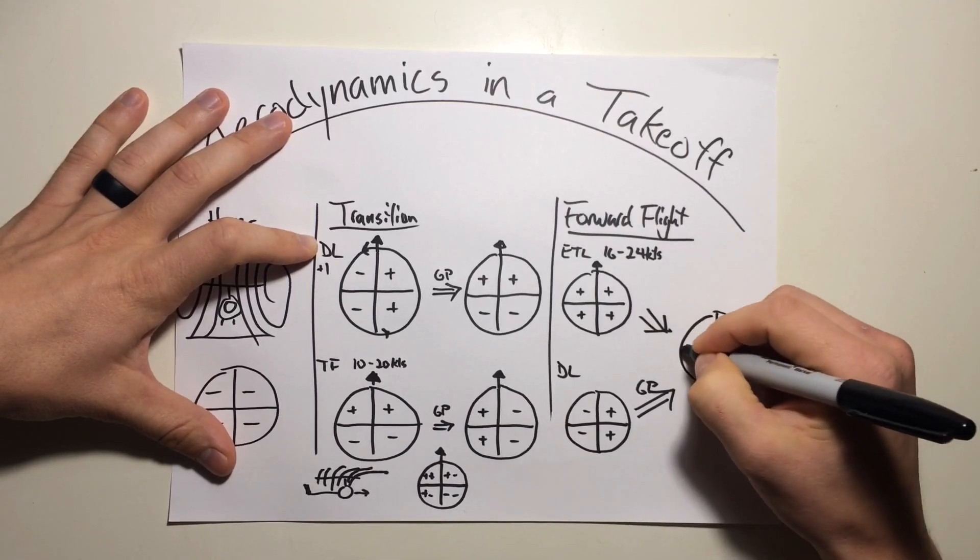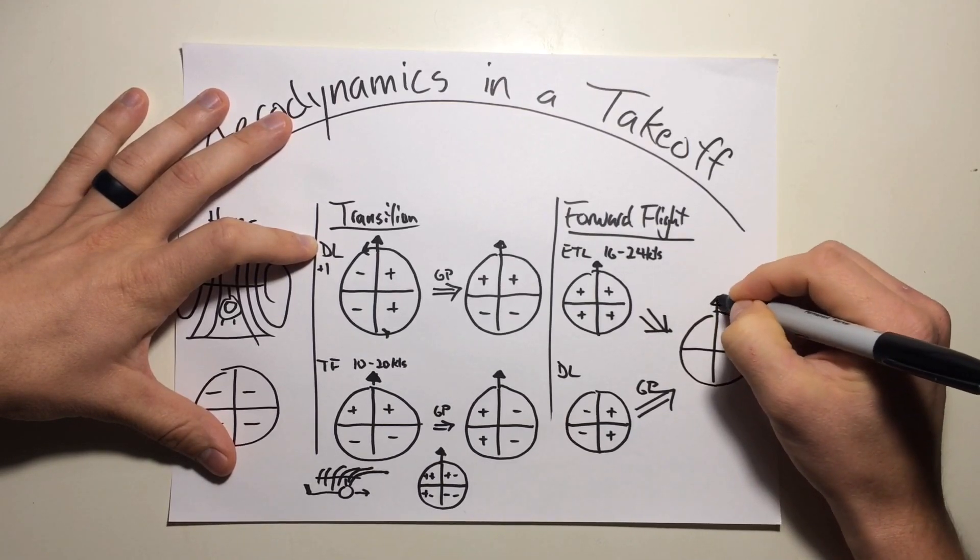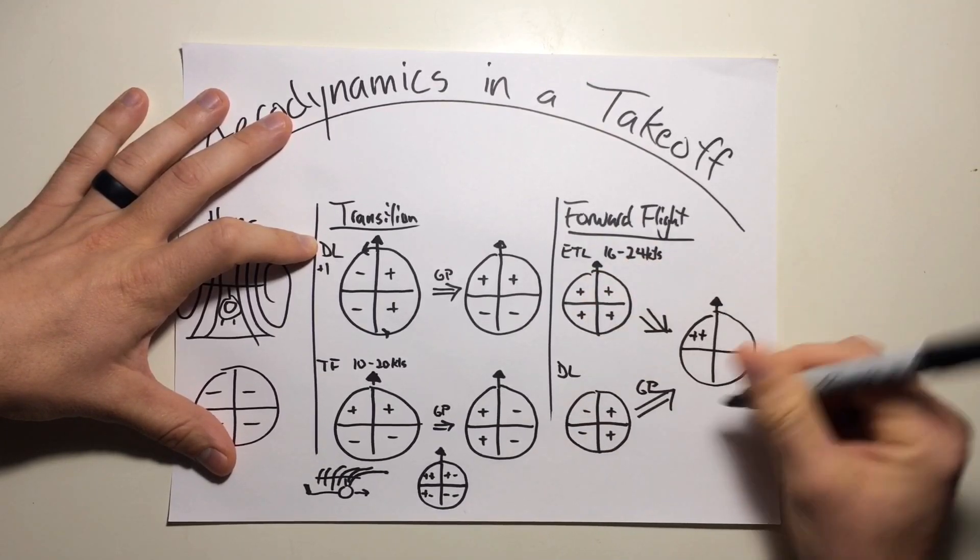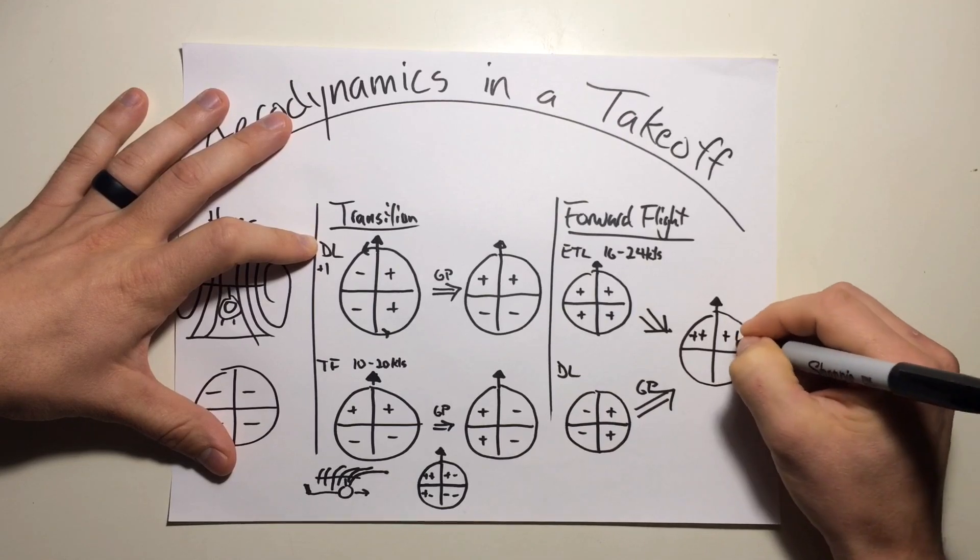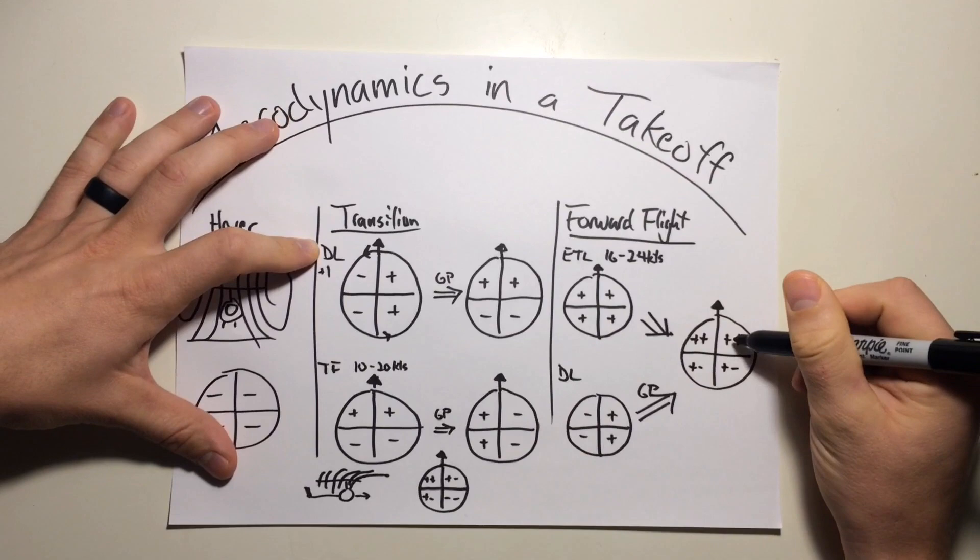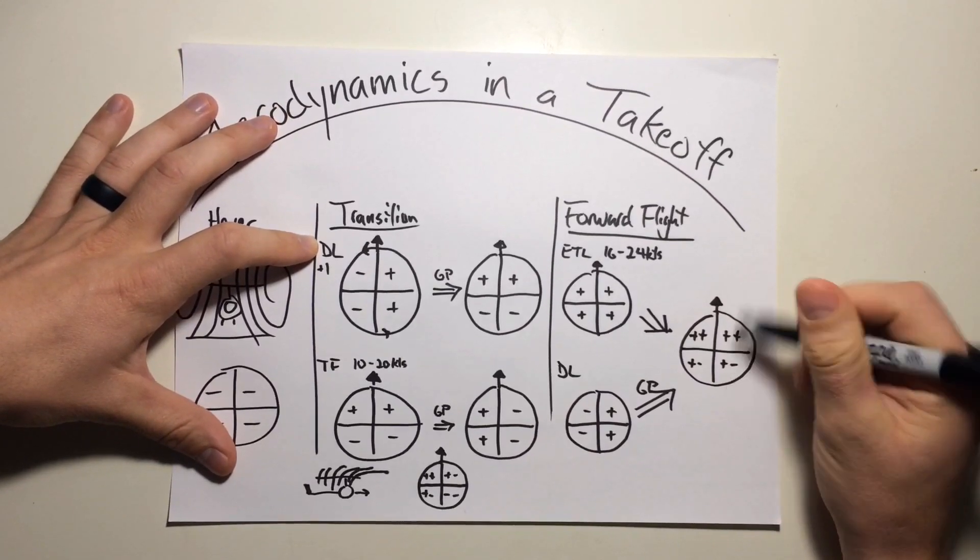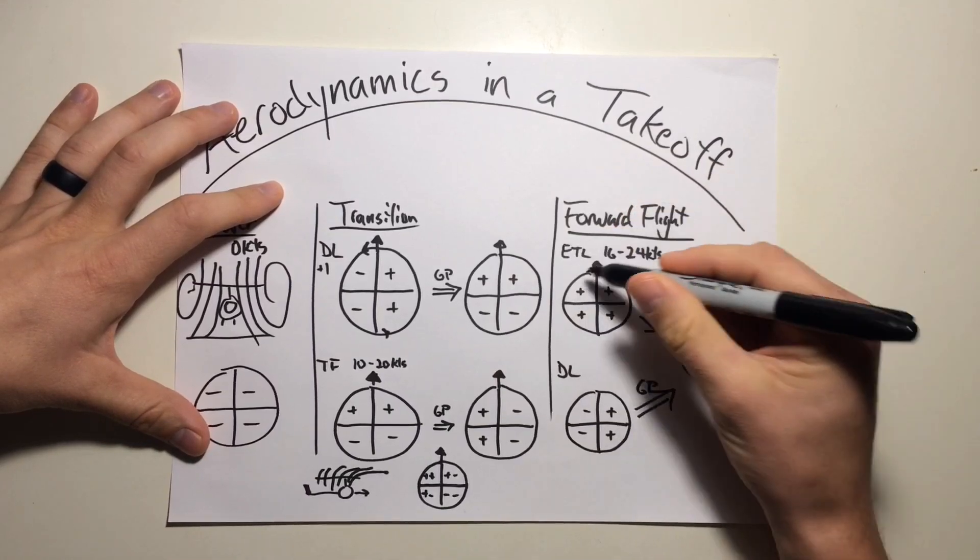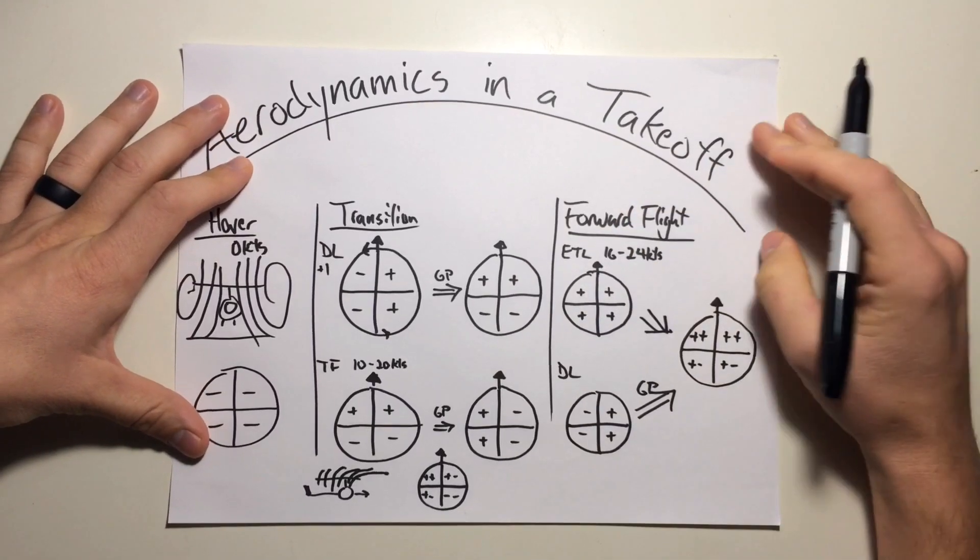So that combines into plus plus, plus plus, plus minus, and plus minus. So still more lift being created on the front half of the disk than the aft, but we don't have that roll anymore. Generally, we're just a lot more efficient because we've outrun those wingtip vortices.